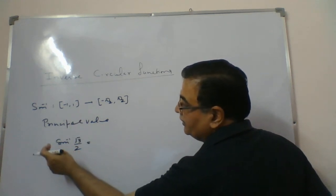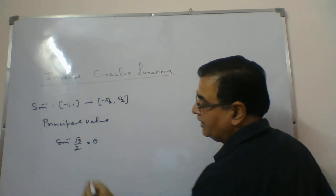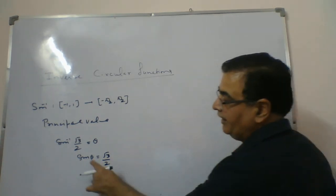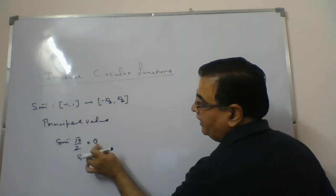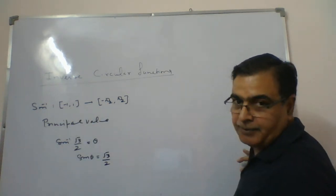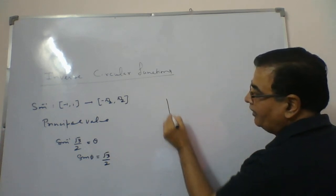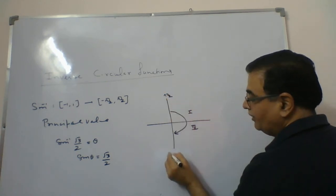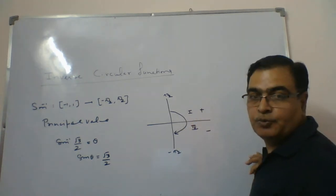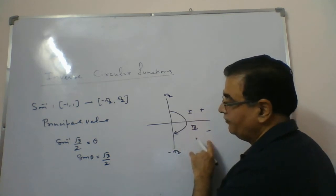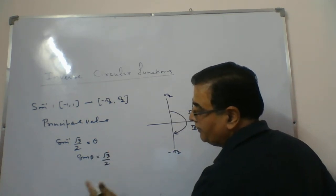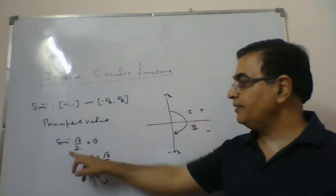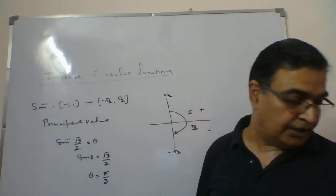Now we want its value. If I take this as theta, then sine theta equals root 3 by 2, and theta will come from the range, which is between minus pi by 2 and pi by 2. Sine theta is root 3 by 2, and the value will come in quadrant one. Since it is positive, theta is simply pi by 3. So the principal value of this inverse function is pi by 3.